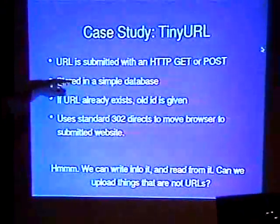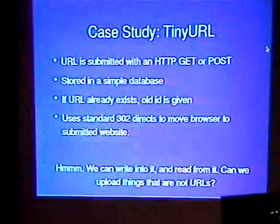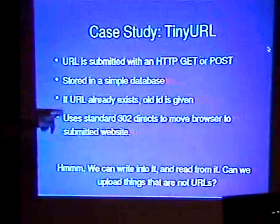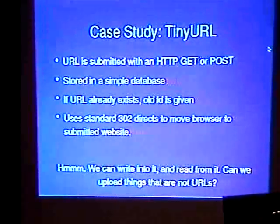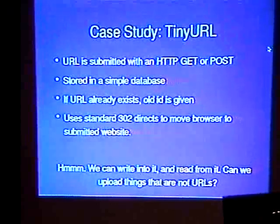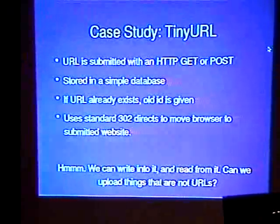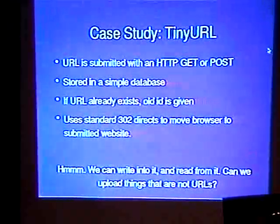You submit a URL, it gets stored in a very simple database. If the URL already exists, the ID already issued is given, and it uses standard 302 redirects to move the browser to the submitted site. So I go to tinyurl.com/24, and it 302 redirects to cnn.com. Hmm — this is kind of interesting. We can write into this database and we can read from this database. What else can we stick in there? Can it not be a URL?